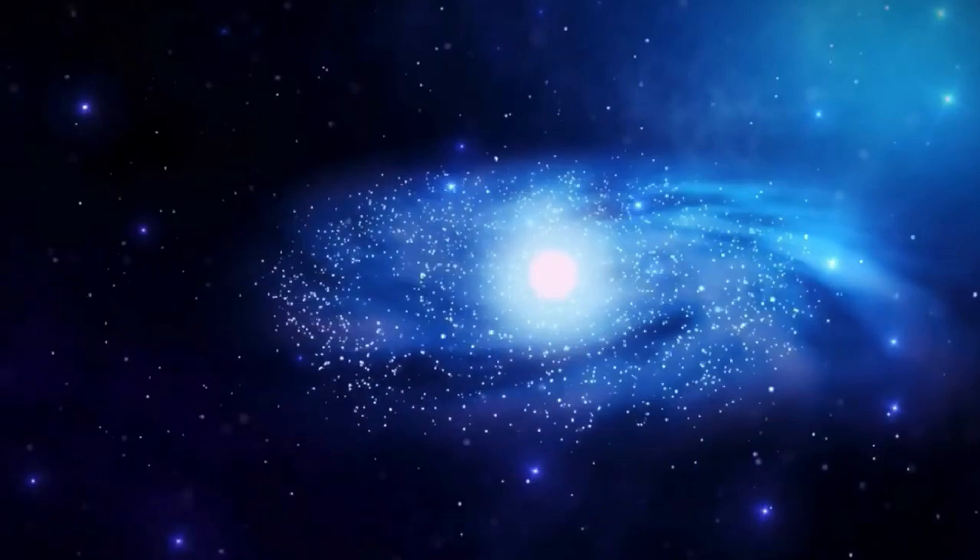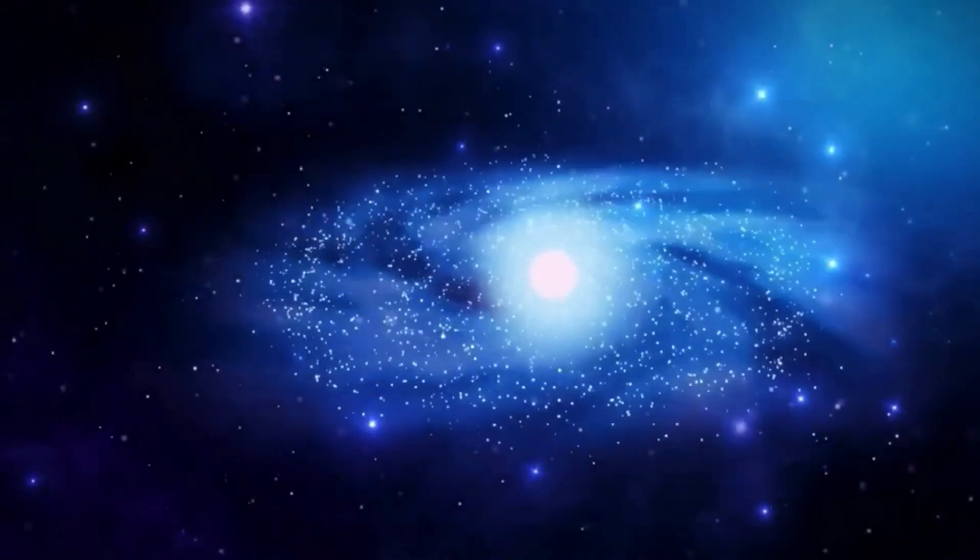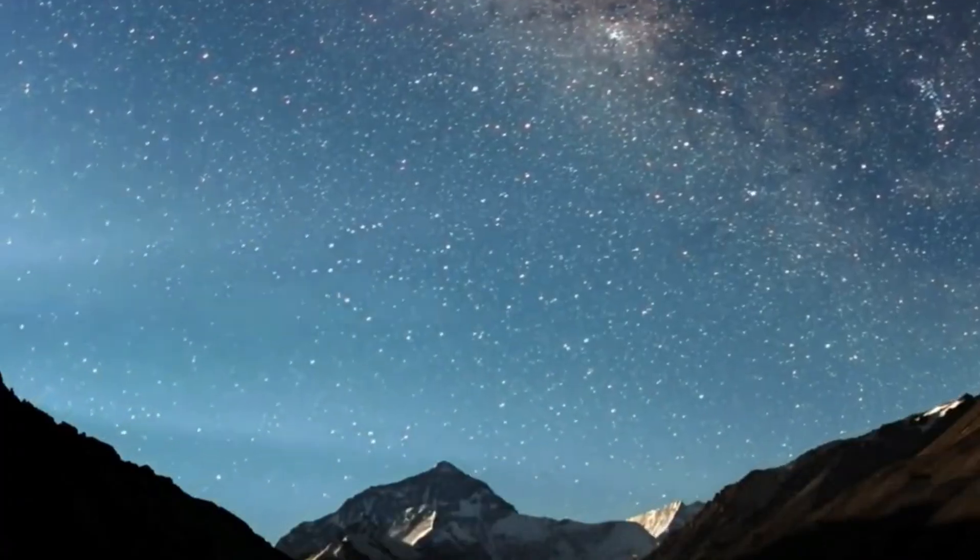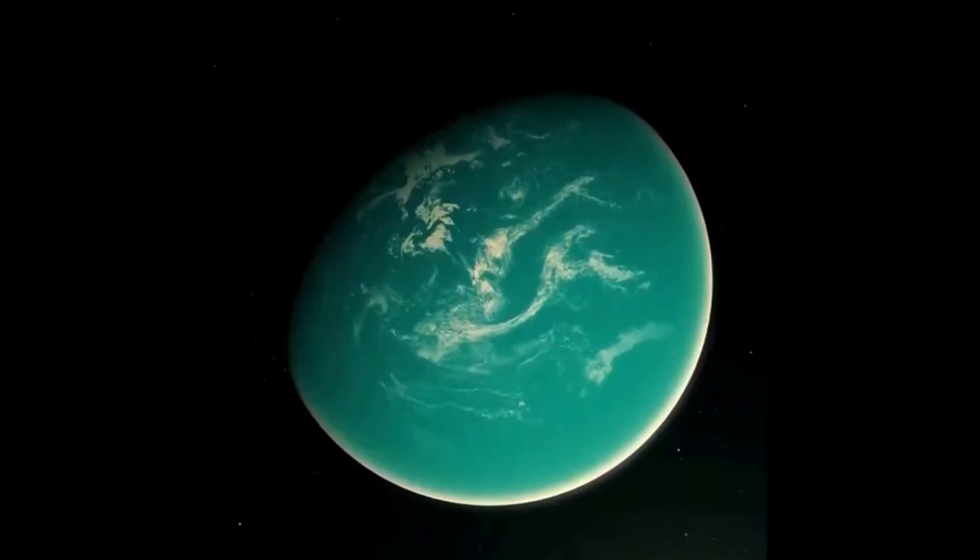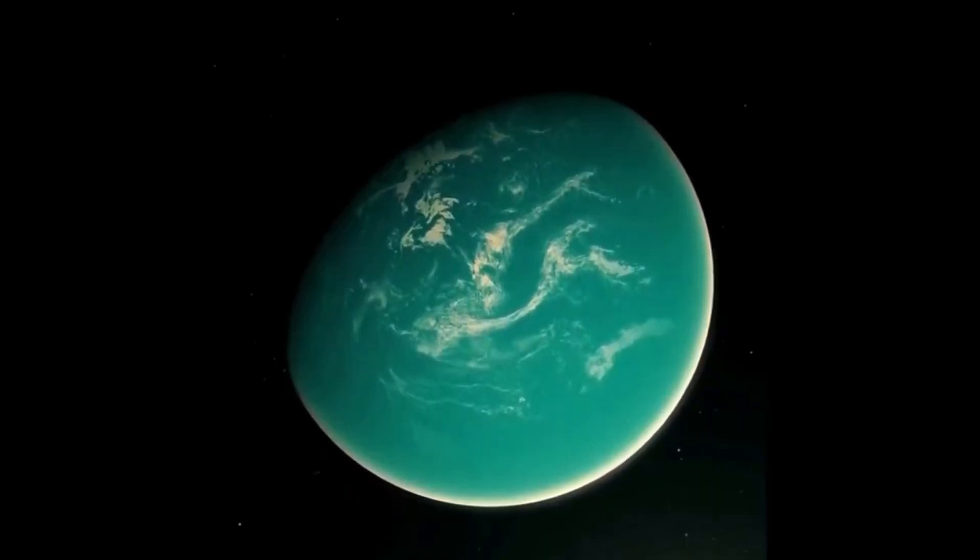about three times the size of our Sun, possibly residing within its star's habitable zone, suggesting conditions conducive to liquid water. However, Proxima b is far from an idyllic second Earth.